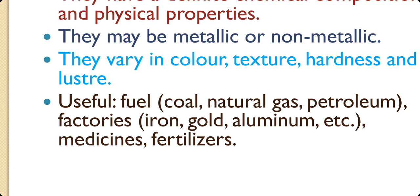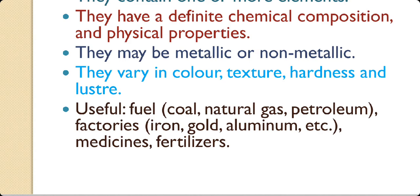For example, they are good fuels. Coal, natural gas and petroleum are the examples of fuels. They are useful in the factories, in industries. Iron and aluminium are important for us. They are used in medicines also. Rock phosphate is used in fertilizers. Also, potash is used in fertilizers.